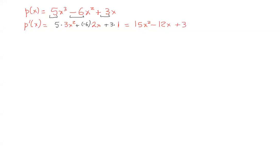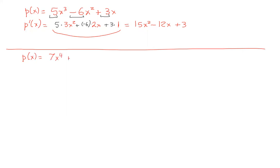It's a good idea to practice doing this directly without the intermediate step. For p(x) = 7x⁴ + 3x³ - 6x² + 2x + 7: the derivative of x⁴ is 4x³, times 7 is 28x³; the derivative of x³ is 3x², times 3 is 9x²; the derivative of x² is 2x, times -6 is -12x; the derivative of x is 1, times 2 is 2; and the derivative of the constant 7 is 0. So p'(x) = 28x³ + 9x² - 12x + 2.